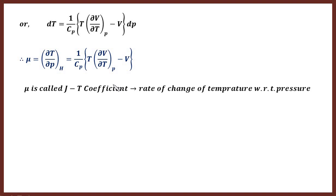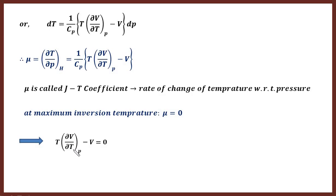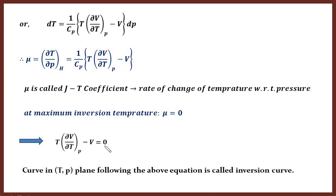At the maximum inversion temperature there is neither heating nor cooling, which means μ must be zero. When μ = 0, ΔT is automatically zero — no change in temperature. Setting μ = 0 in the expression gives: T(∂V/∂T)_P − V = 0. This is a very important equation. If you draw a curve in the T-P plane that follows this relation, that curve is called the inversion curve, and it allows you to determine the conditions for heating or cooling effect.